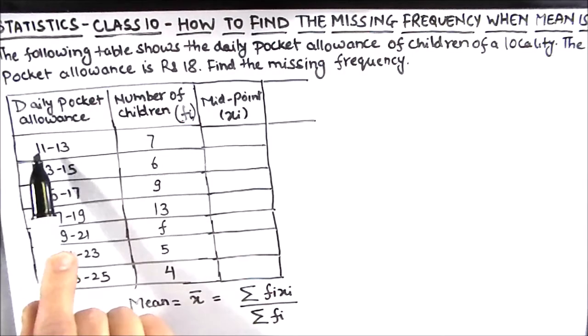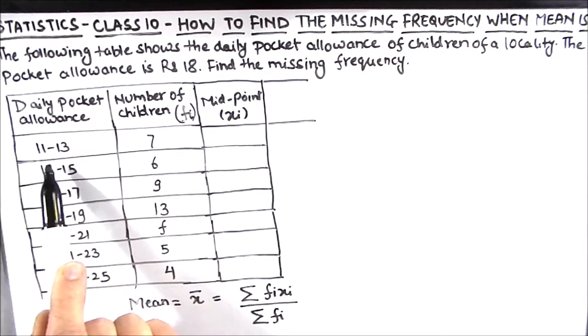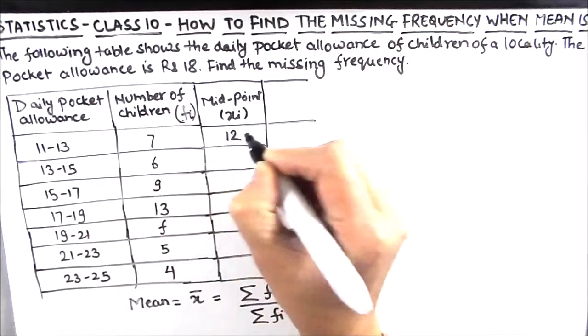So to find out the mid term, we are going to find the midpoint of the two endpoints. We have 11 plus 13, so 11 plus 13 is 24 divided by 2, which is 12. So midpoint is 12.